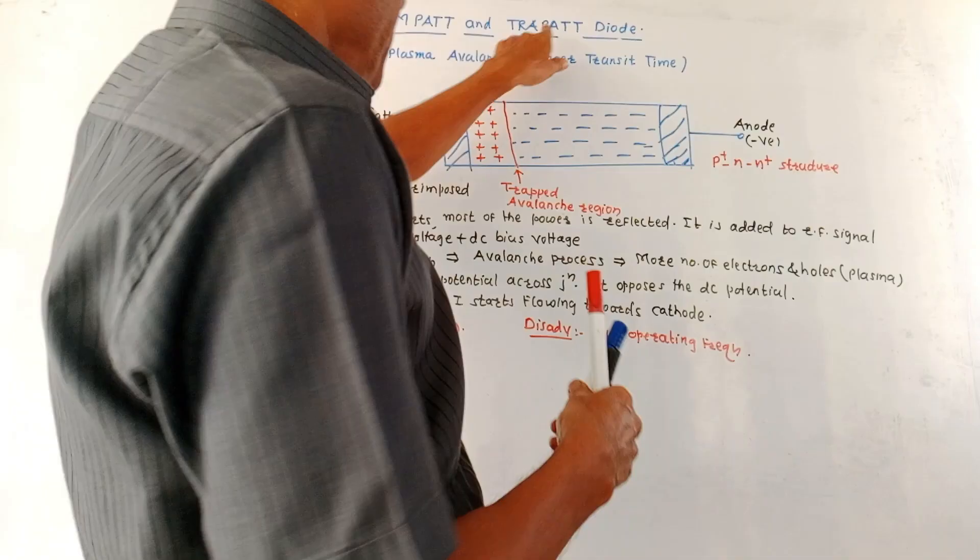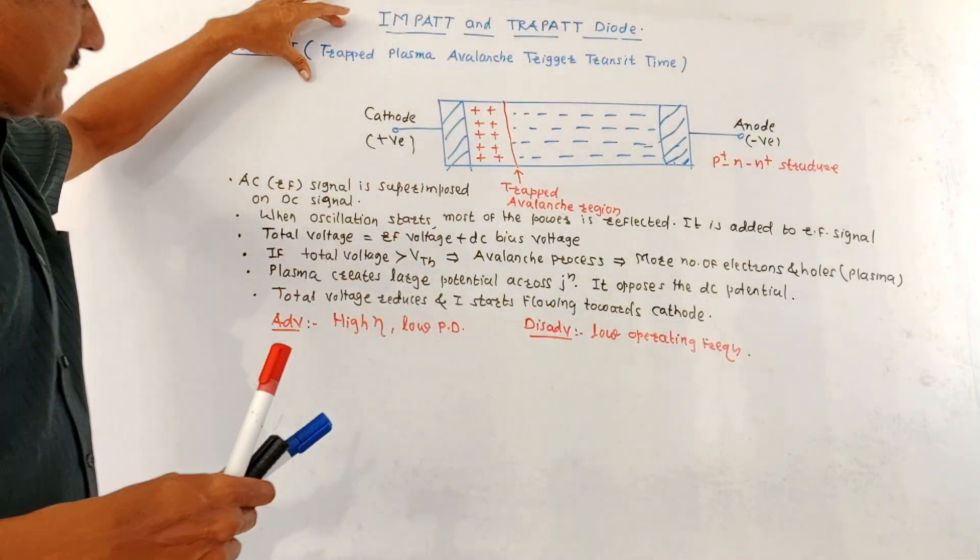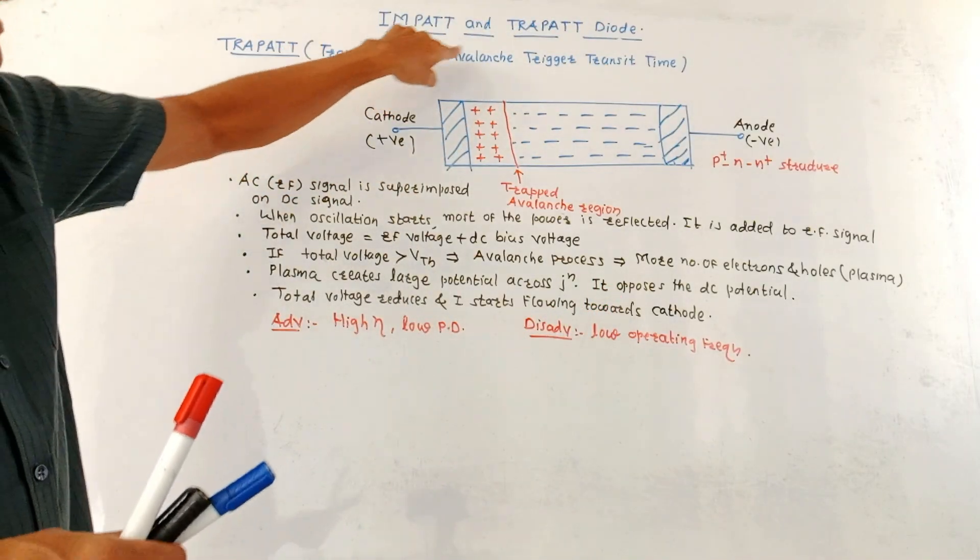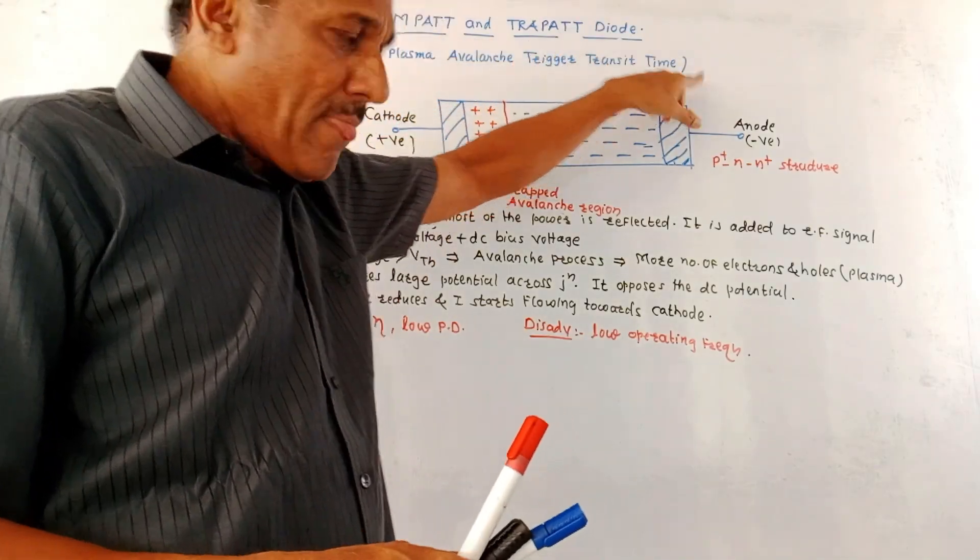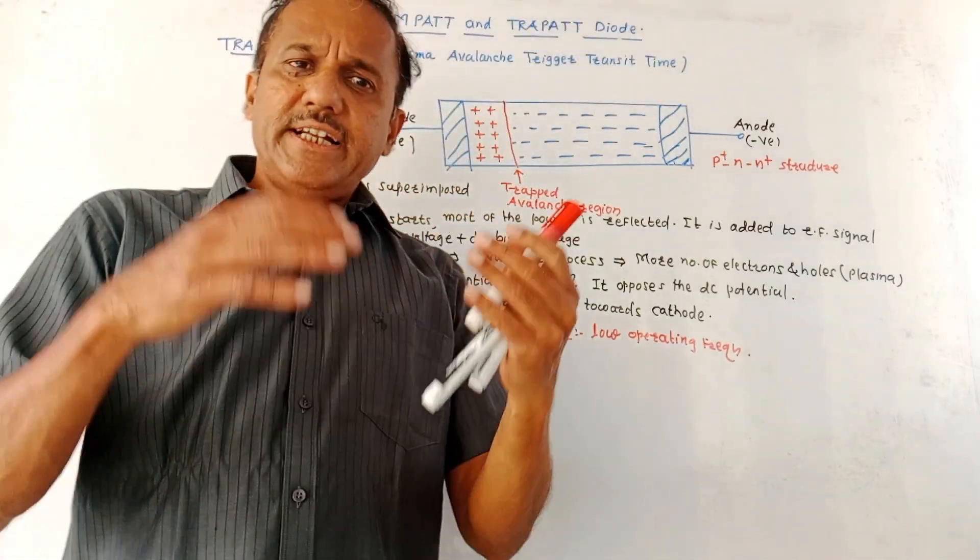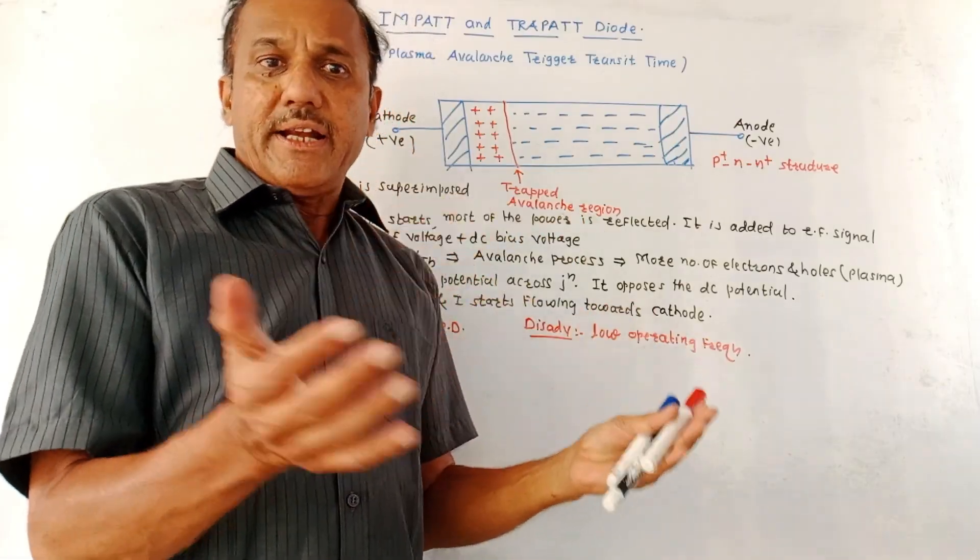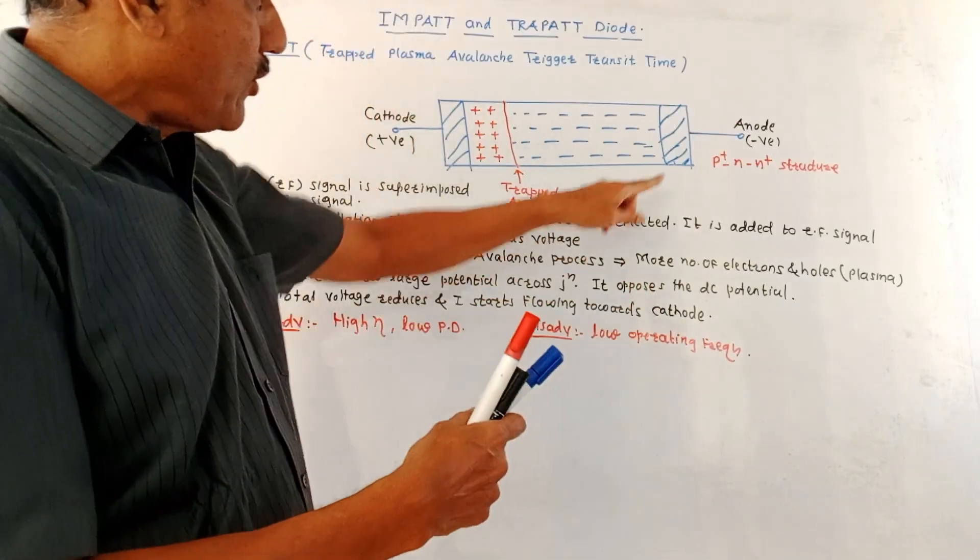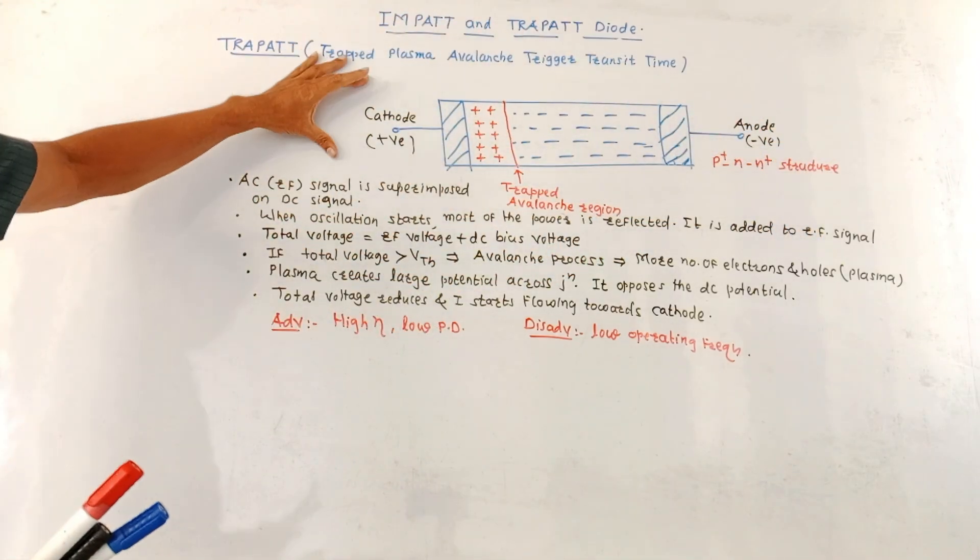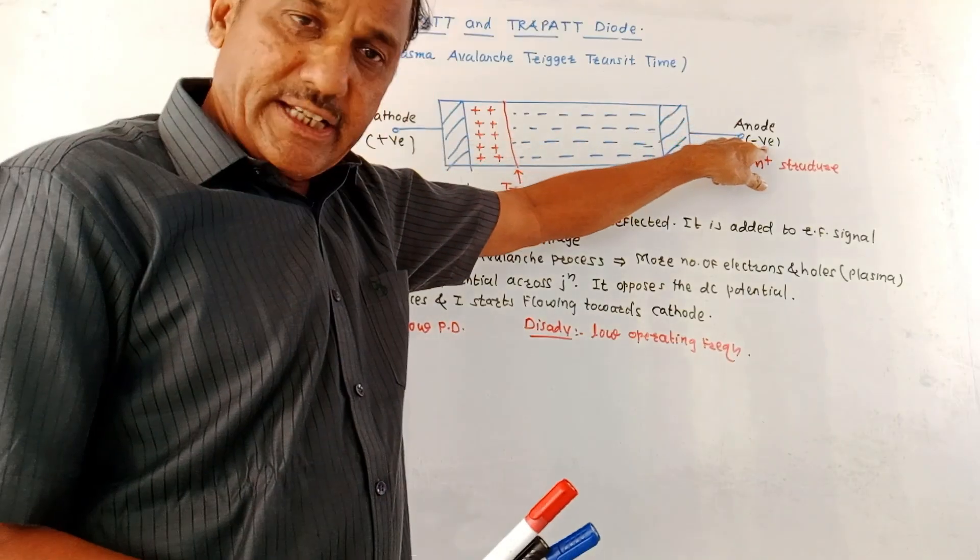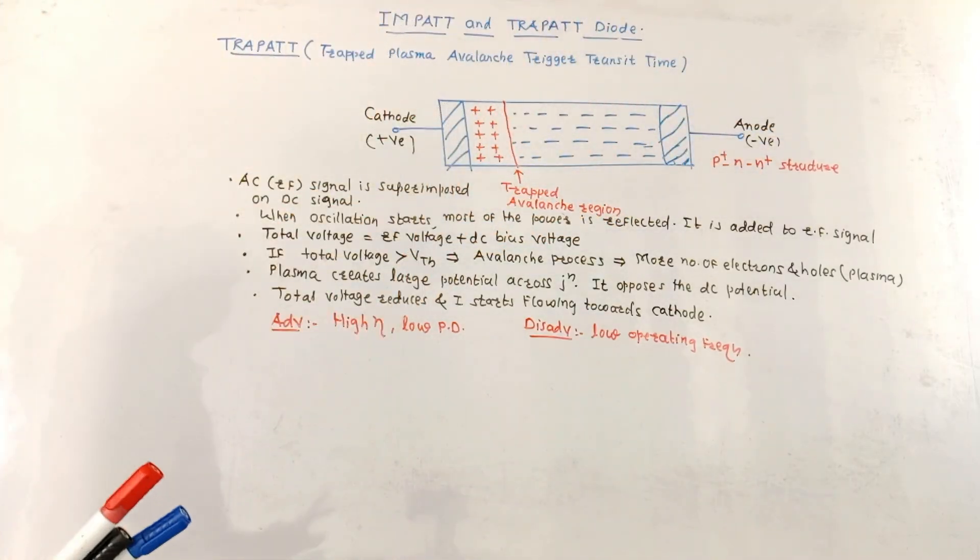Next is TRAPATT diode. It is trapped plasma avalanche trigger transit time diode. Actually there are slight differences as far as this TRAPATT and IMPATT diodes are concerned. TRAPATT diode is basically P plus N N plus structure. Now the cathode is connected to positive side, anode is connected to negative side as shown in this diagram.